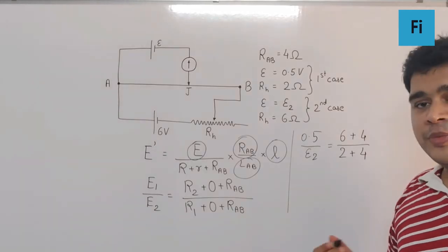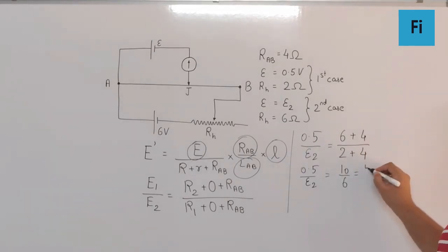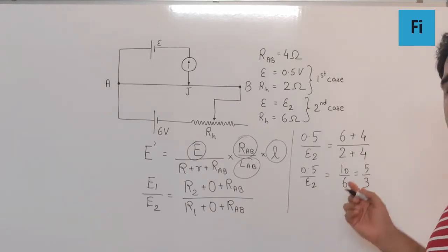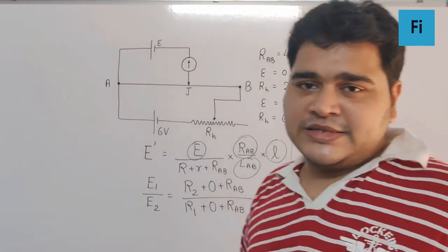This is 0.5/E2 equals 10/6. We can reduce this down to 5/3. When you cross multiply, you get the value of E2 as 0.3 volts, and that is your final answer.